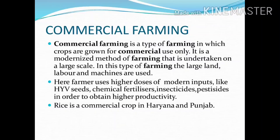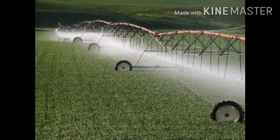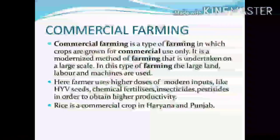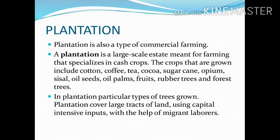Rice is a commercial crop in Haryana and Punjab. Now let us see the next type of farming, that is plantation. Plantation means growing a particular kind of plant in an area, so plantation is also a type of commercial farming.